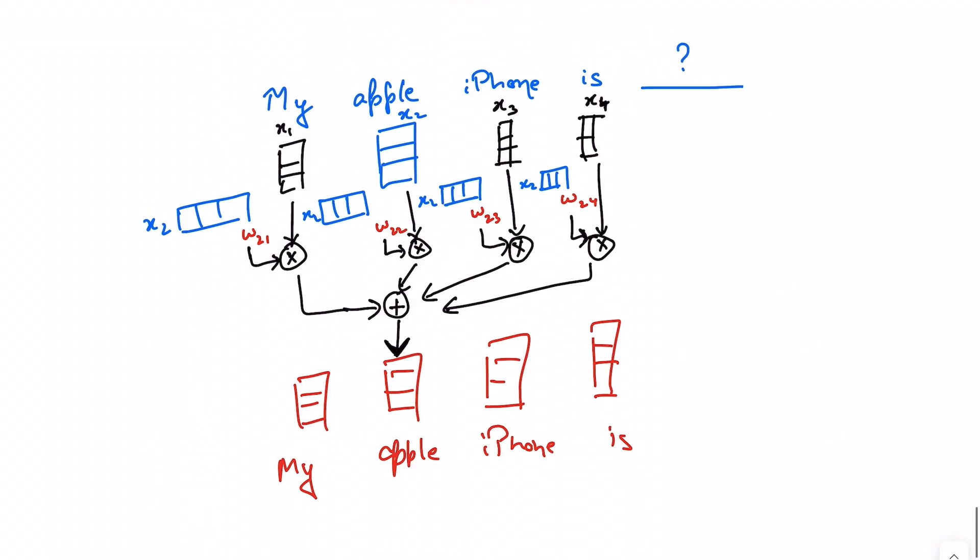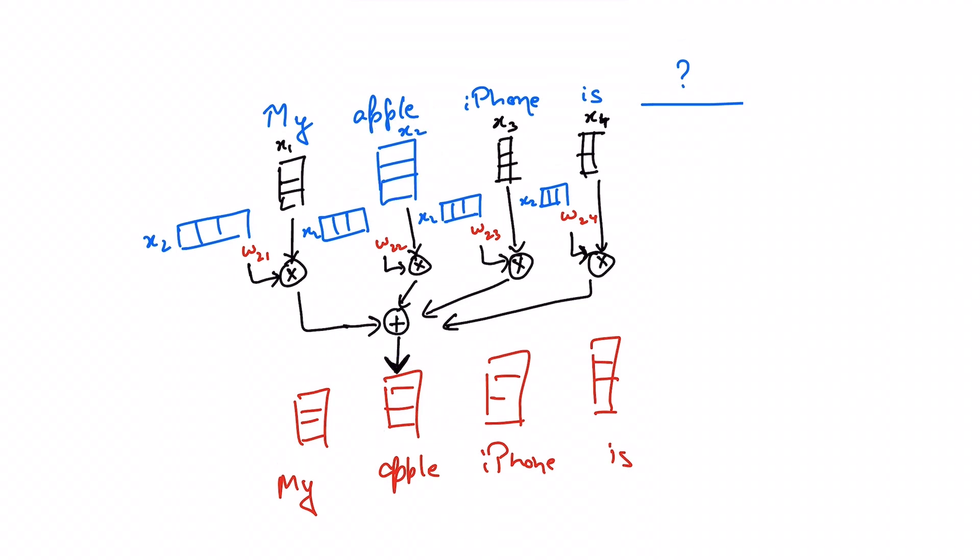So in summary in order to update the word2vec representation of a word to be more contextualized we take the representation of the words, we do a dot product of that with the neighboring words to come up with weights. Once we have the weights we take a weighted sum to come up with the new updated contextualized word representation.